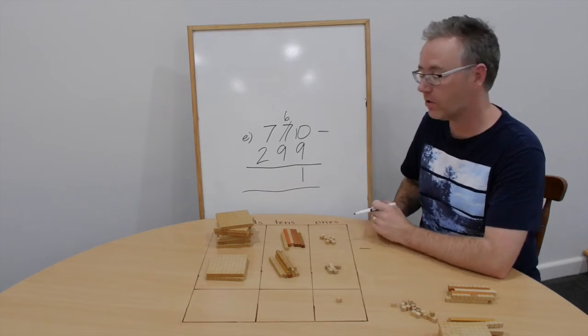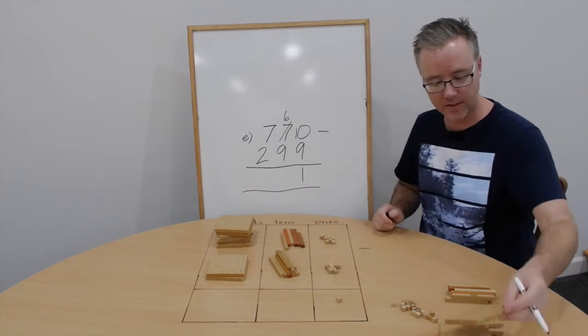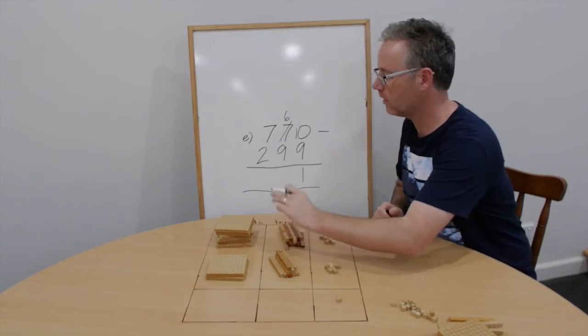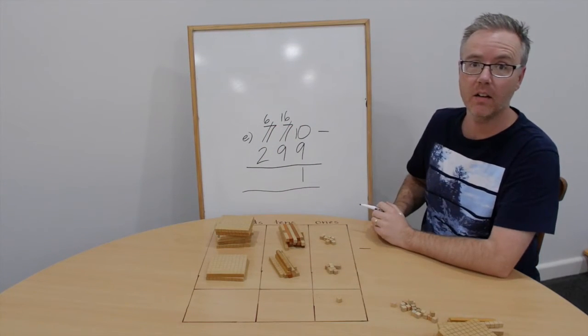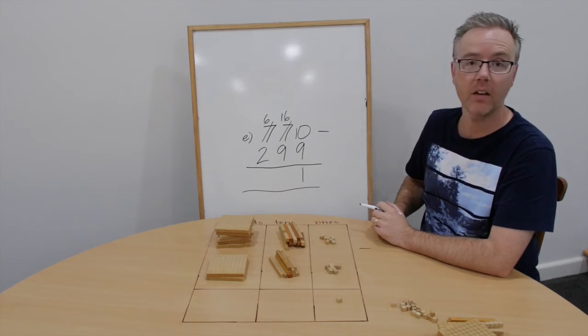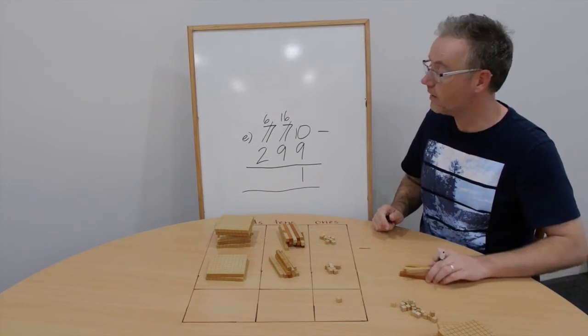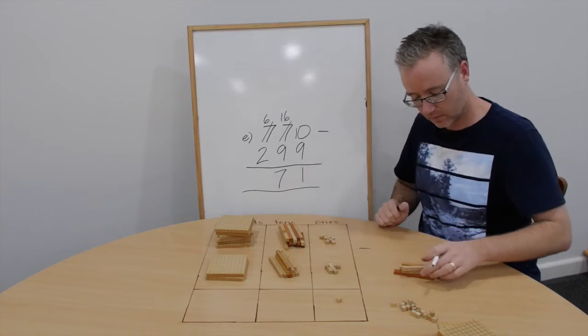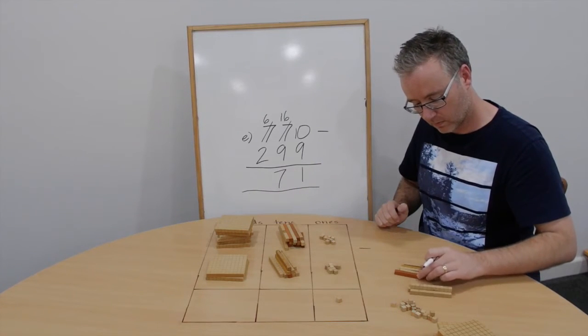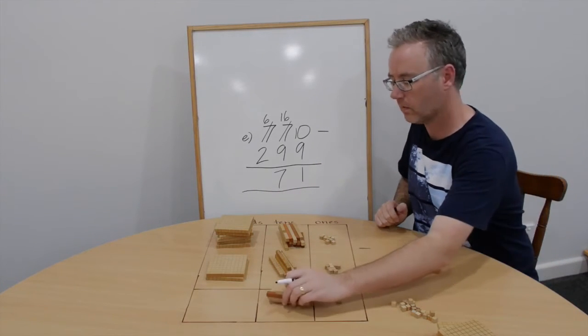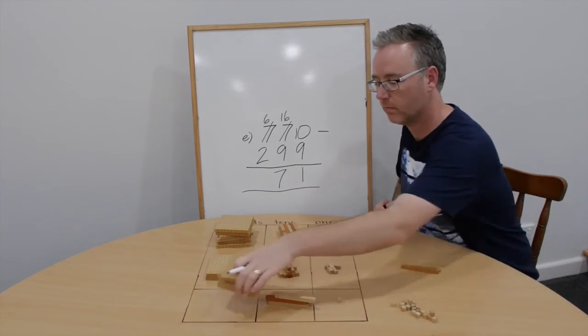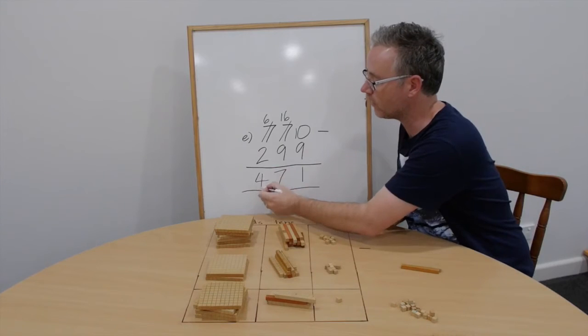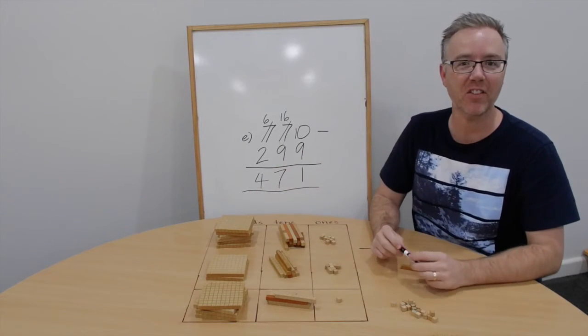6 take away 9 we can't do. Let's trade 100 for ten tens. We now have 16 tens take away 9 tens. 16 take away 9 is 7. And 6 take away 2 is 4. Answer, 471. Check your estimate.